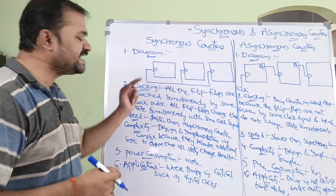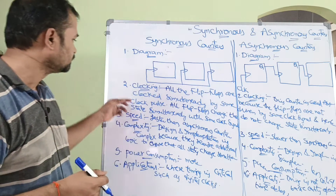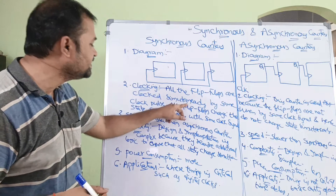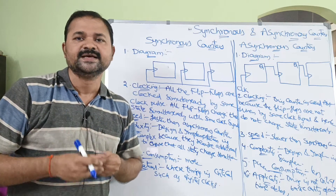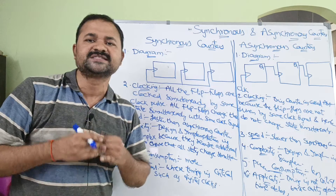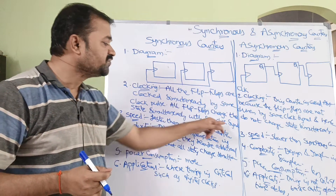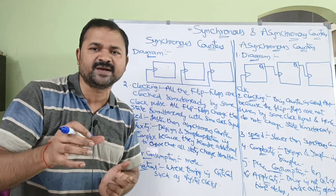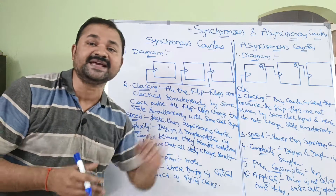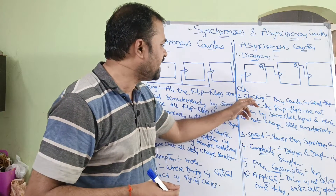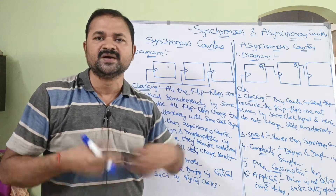The second difference is clocking. Clocking refers to the clock pulse or clock signal. In a synchronous counter, all the flip-flops are clocked simultaneously by the same clock pulse. We apply the same clock pulse on all the flip-flops simultaneously, so all the flip-flops change state simultaneously with the same clock pulse.